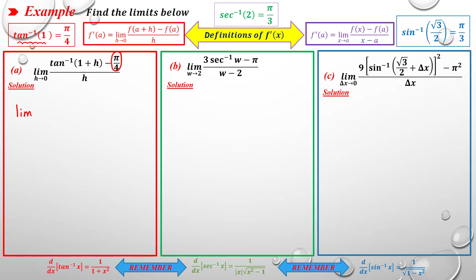So the limit becomes [arctan(1+h) - arctan(1)] / h as h→0. This matches the first definition of the derivative, so we identify the function and the point a. Here a equals 1 and the function is f(x) = arctan(x).